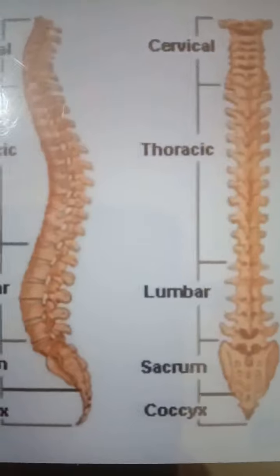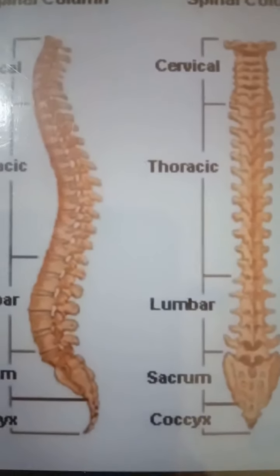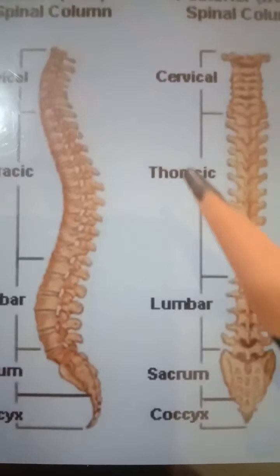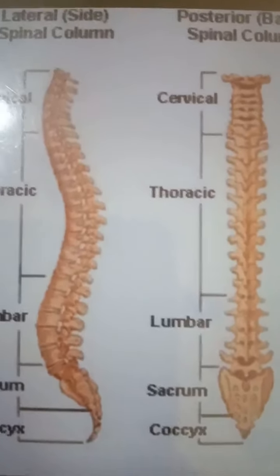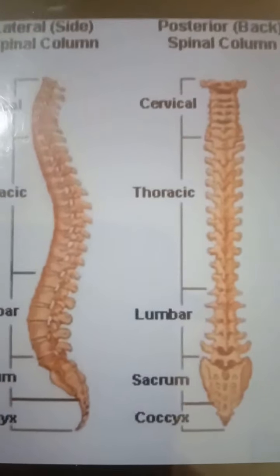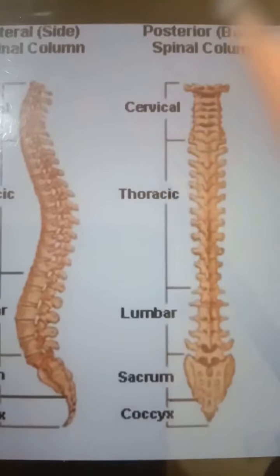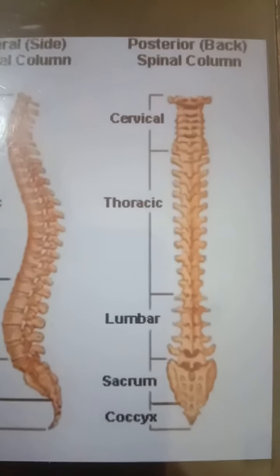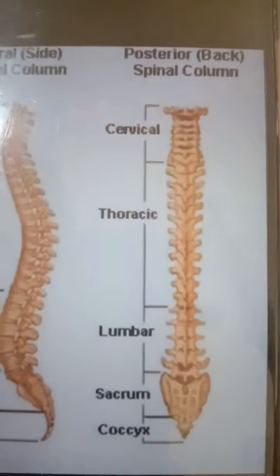The length of the vertebral column is approximately 70 centimetres in males and 60 centimetres in females. The intervertebral disc contributes approximately one-fifth of the length of the vertebral column.